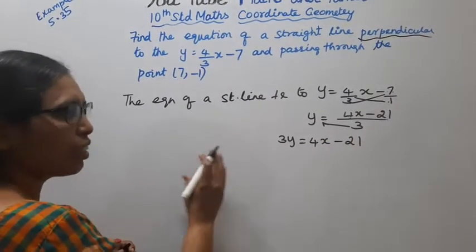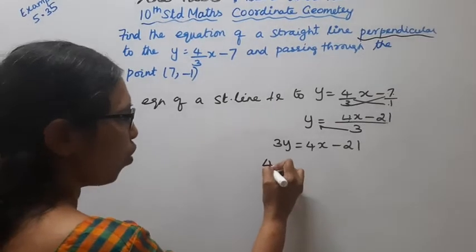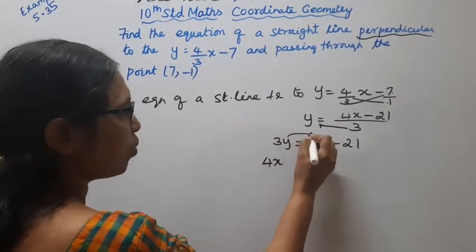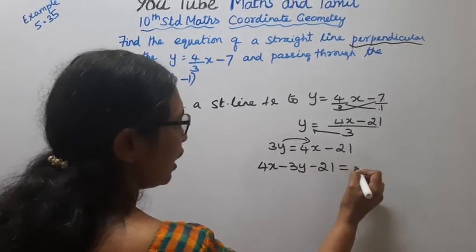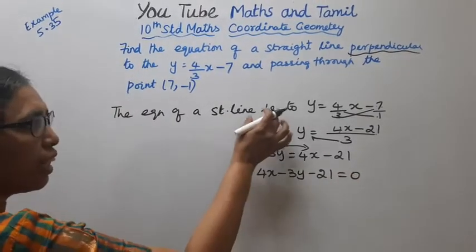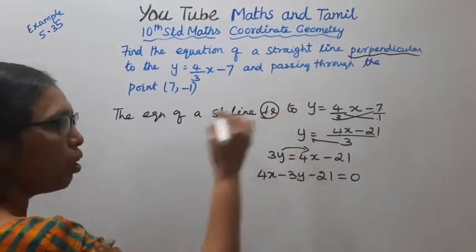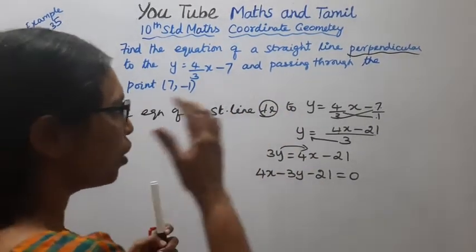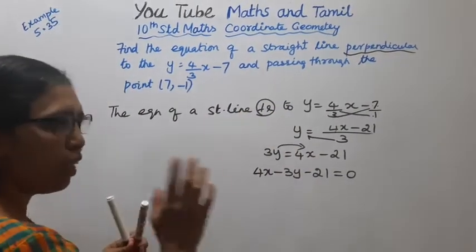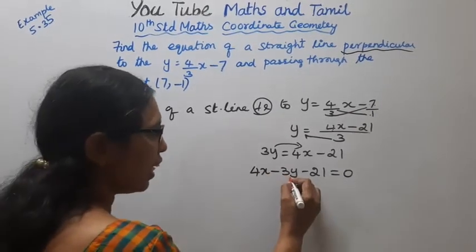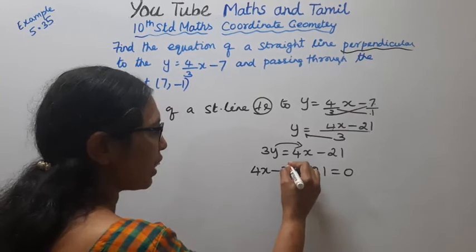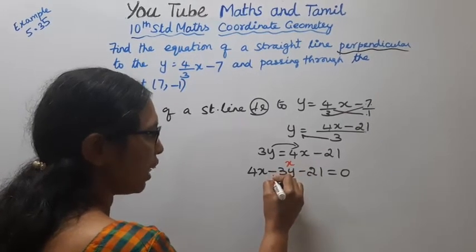Now bringing x, y, constant. 4x into 3y, minus 3y minus 21 equal to 0.